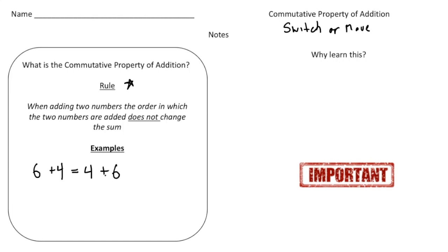Another example could be if we're adding fractions. Let's say 2 thirds plus 5 sevenths. Well, that's the same as adding 5 sevenths plus 2 thirds. When all we're doing is adding, you're allowed to move the numbers around like this.